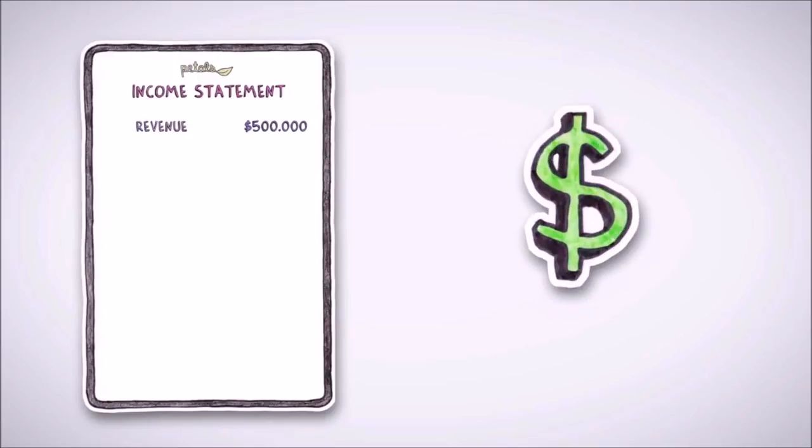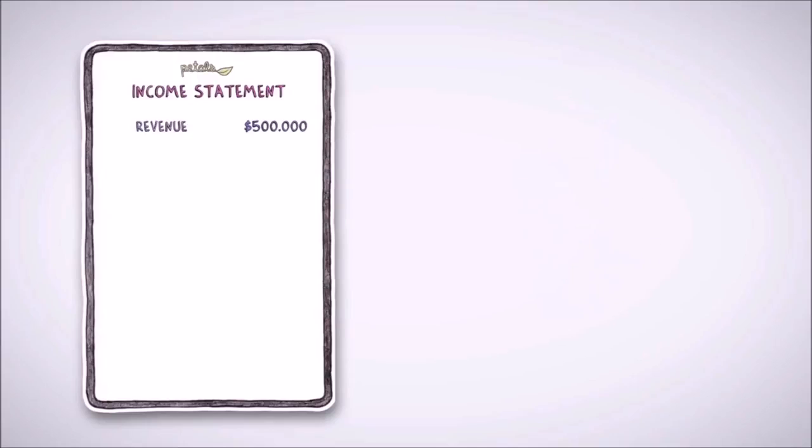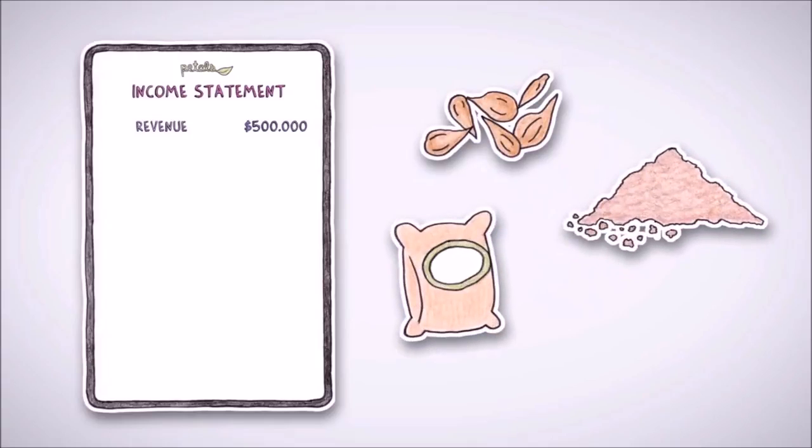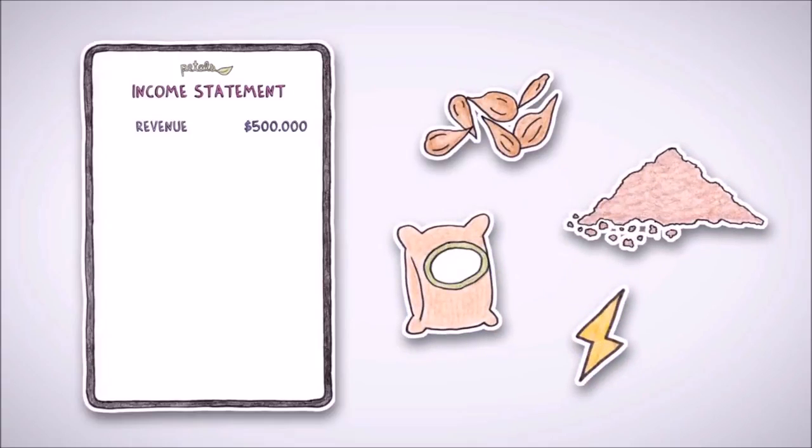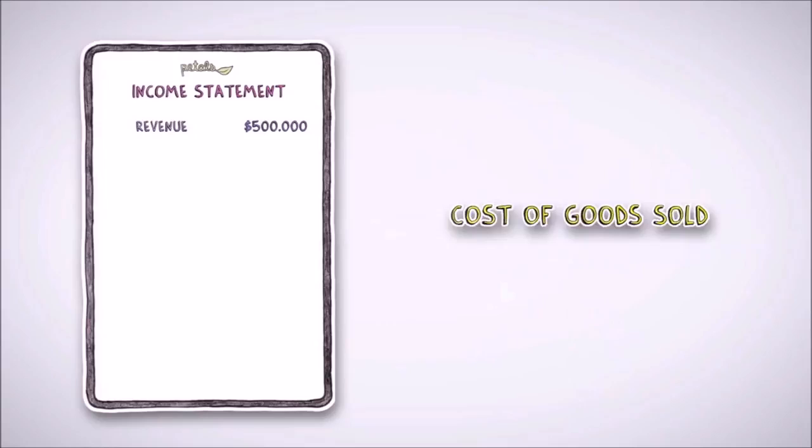Next, Mary needs to add up all the costs directly associated with cultivating her flowers. These costs include things like seeds, earth, fertilizer, and electricity. These are added together and are collectively known as costs of goods sold or COGS.